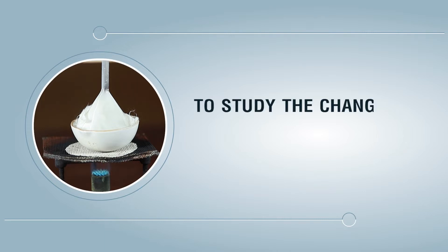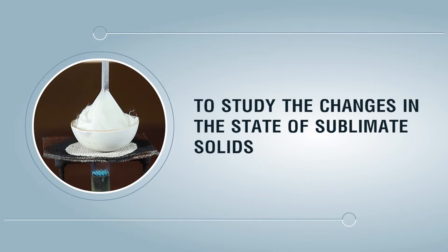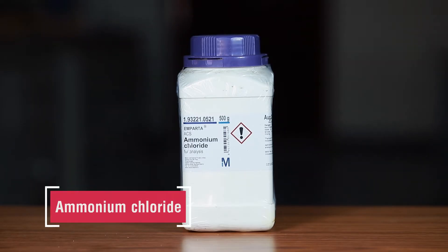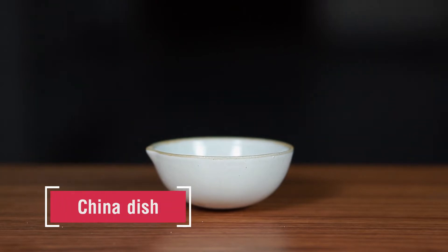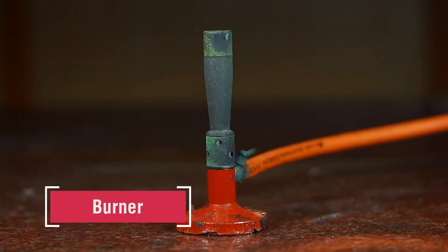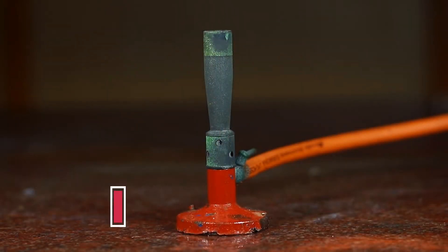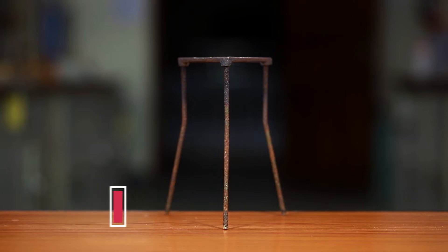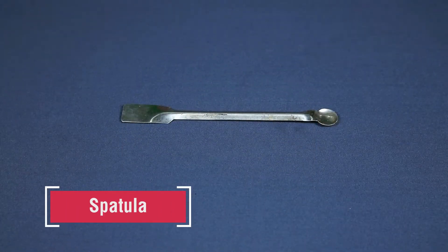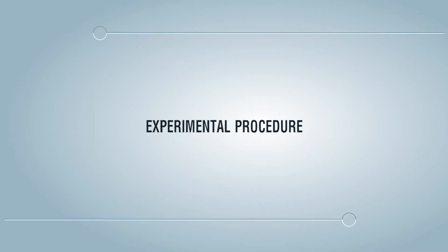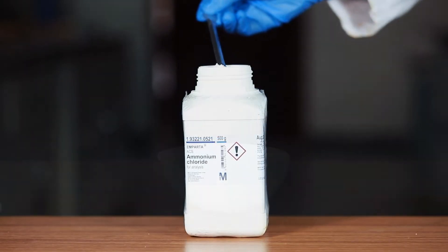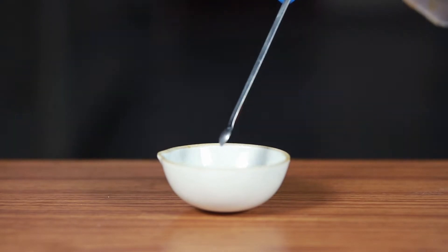To study the changes in the state of sublimate solids on heating. Materials required: ammonium chloride, China dish, funnel, burner, tripod stand, wire gauze, spatula. Experimental procedure: take powdered ammonium chloride solid in a China dish using a spatula.